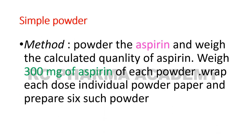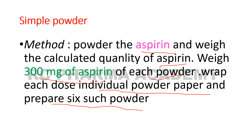For simple powder preparation, the aspirin weight is calculated. 300 mg of aspirin is taken and wrapped into individual powders — six sachets total. This is the method of preparation of simple powder.